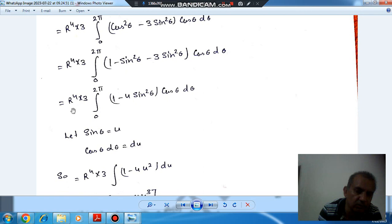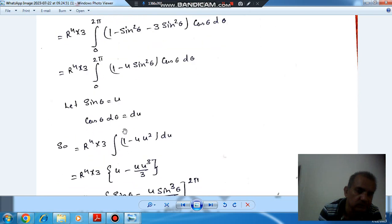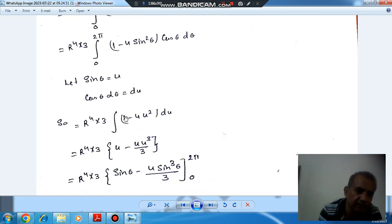And limits are 0 to 2π, and this is r⁴. So let sin θ be u, and if we differentiate it then it will be cos θ dθ = du. So if you put the value of cos θ dθ as du and perform integration, then it will be u - 4u³/3.